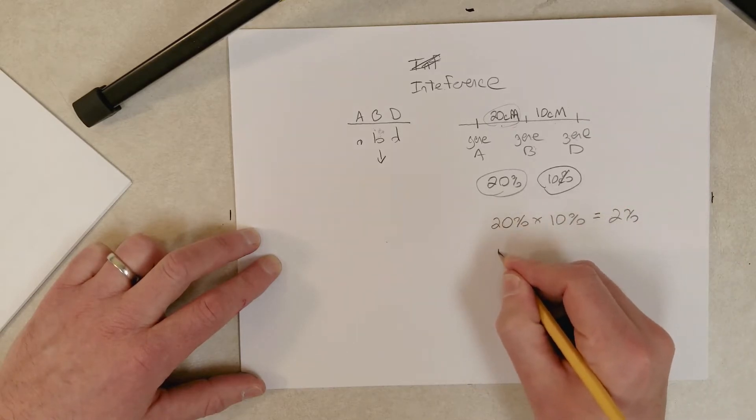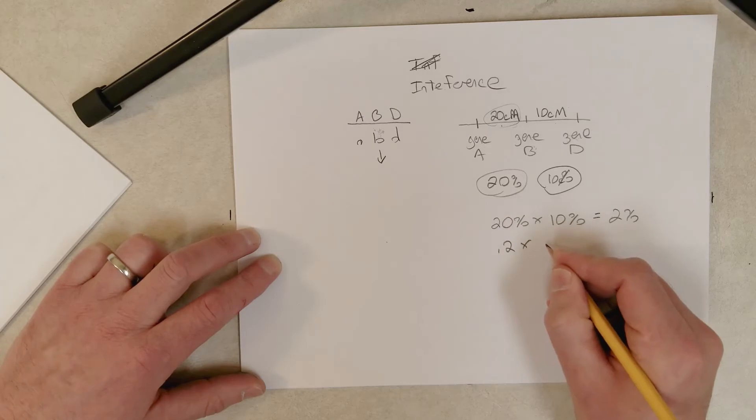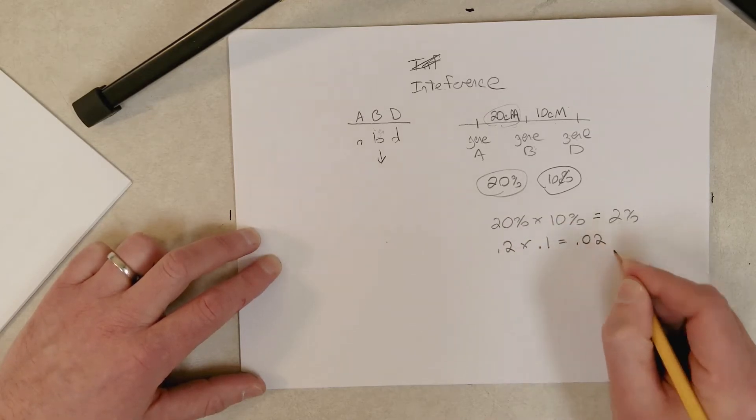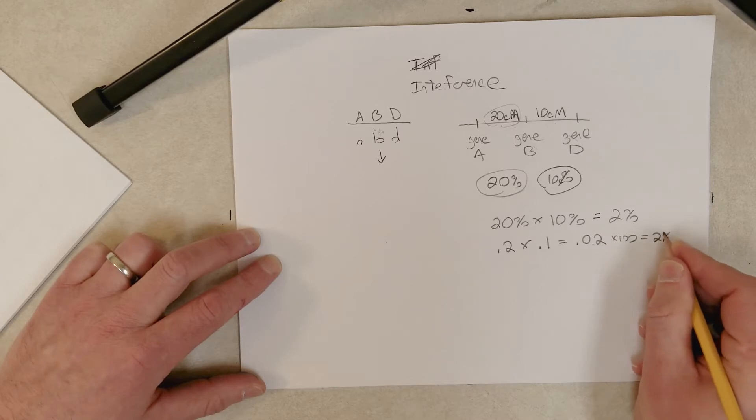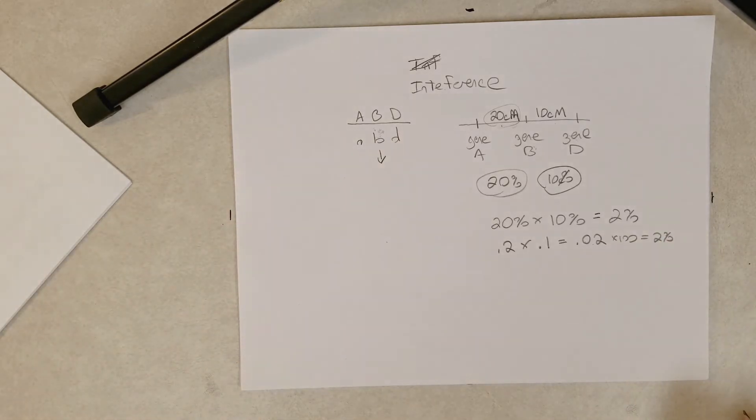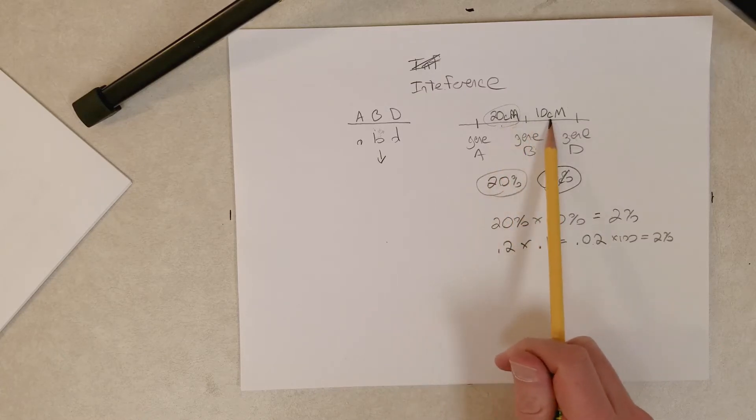But how do we derive that? Convert this to decimals: 0.2, convert that to a decimal 0.1, multiply that, it's going to be 0.02, and convert that to a percent by multiplying by 100, and you get 2 percent. So we can predict the number of double crossover gametes we expect to see simply based on the genetic distance between the genes involved in the double crossover.